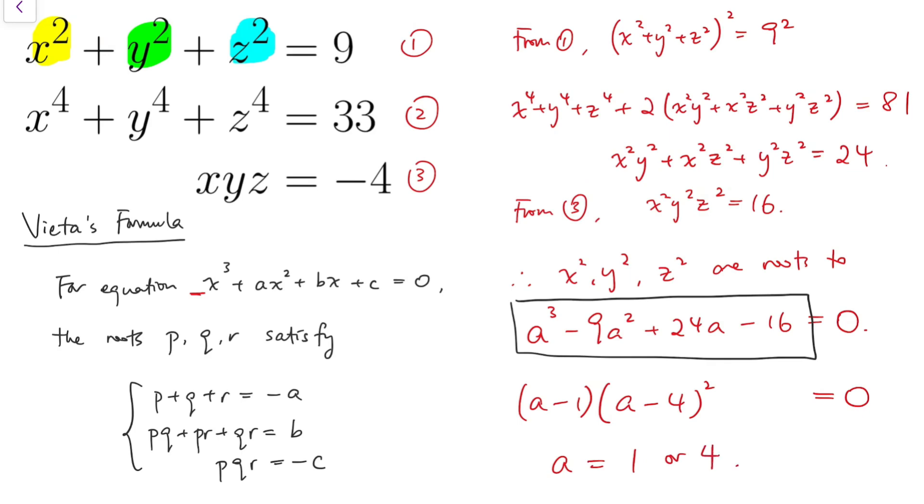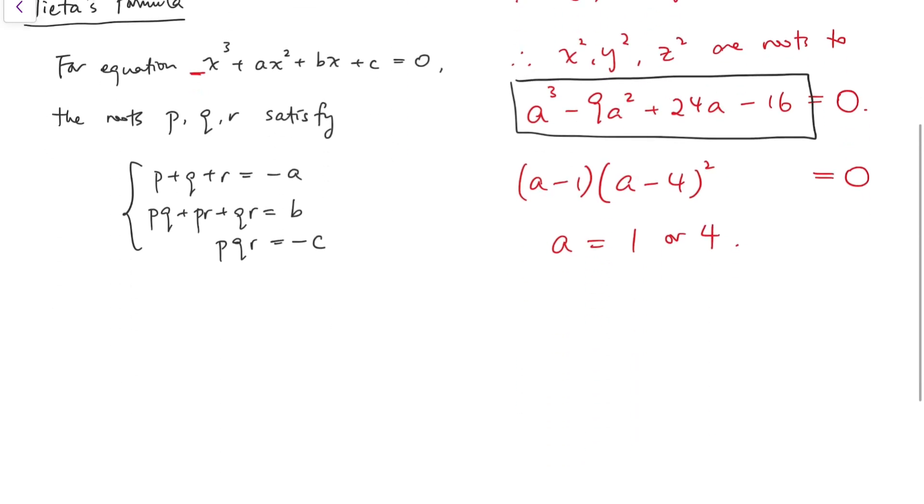That means a equals 1 or 4. From this, we know that x squared, y squared, z squared equals either 1 or 4. So x, y, z is either plus or minus 1, or plus or minus 2.